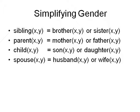So we can simplify gender also. We can say x is a sibling of y if they are brothers or sisters. Parent is defined as mother or father. Child is defined as son or daughter. Spouse is defined as husband or wife.